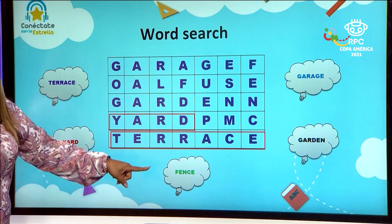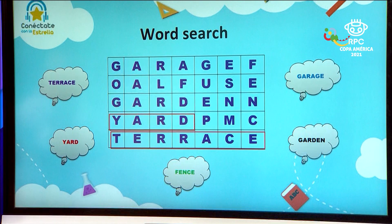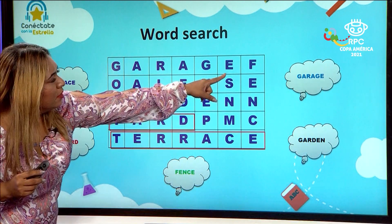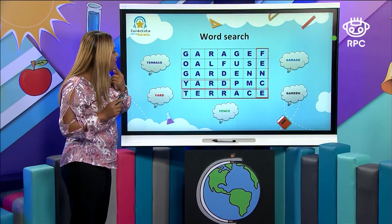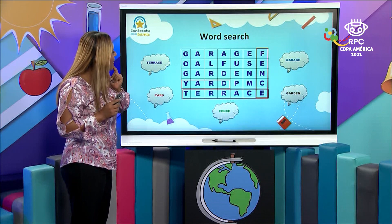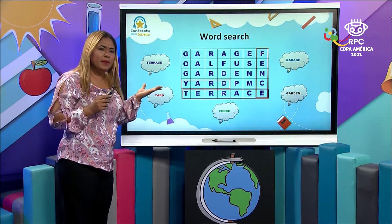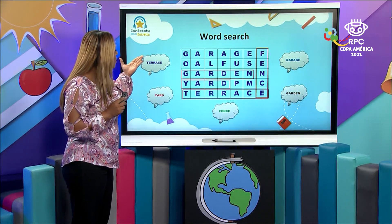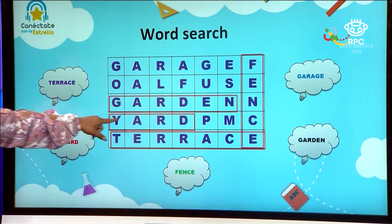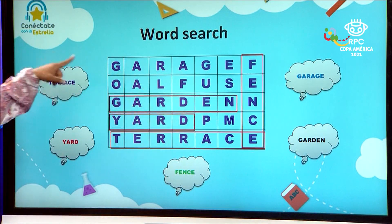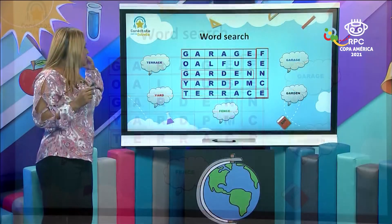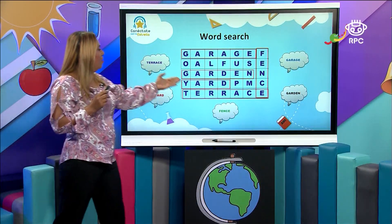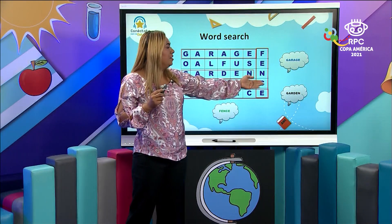Then we have fence. Oh, look, just right there. Fence. Then, what is the next one? I have garden and garage. Do you see them on the top? Oh, here, you see? Garden. There is a garden. And on the top, we have garage. So we have terrace, yard, fence, garden, and garage.